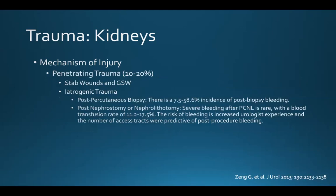Penetrating trauma can account for the remaining 10 to 20% of renal injuries. This includes stab wounds and gunshot wounds, but can also include iatrogenic trauma. After biopsy, there's about a 7% to 60% incidence of post-renal biopsy bleeding, and bleeding can also be seen after a nephrostomy or after nephrolithotomy.